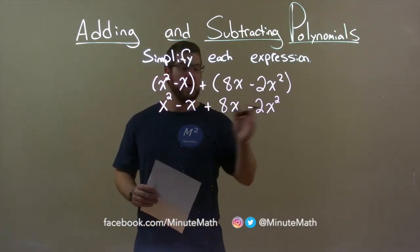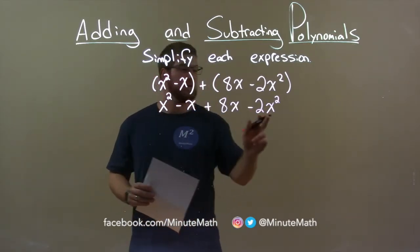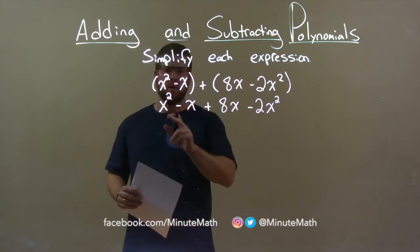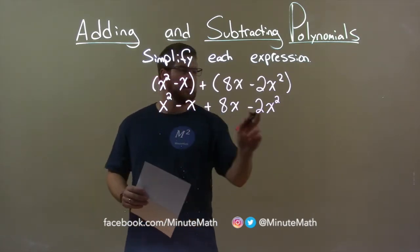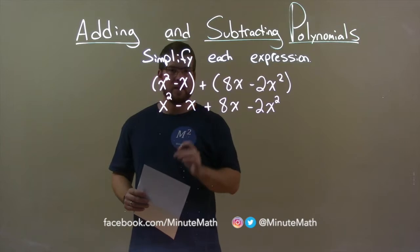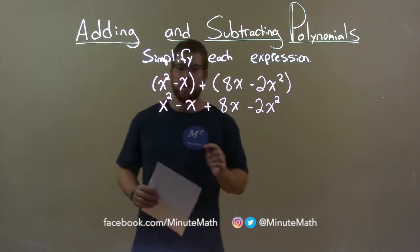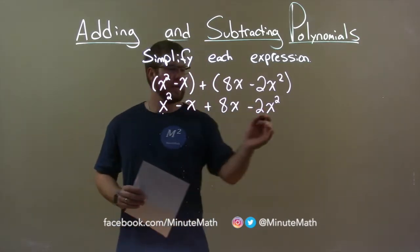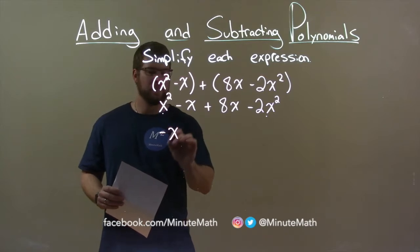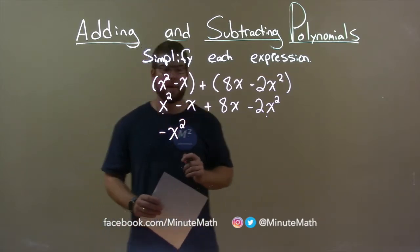My highest degree is x squared. I got two of them, right here and right there. Well, x squared minus 2x squared is a negative, or just minus, x squared. So we have minus 1x squared.